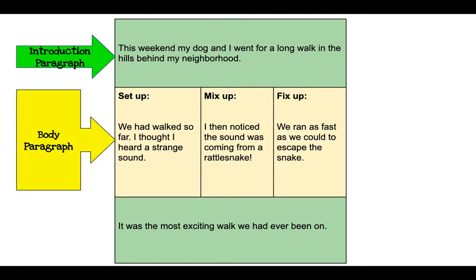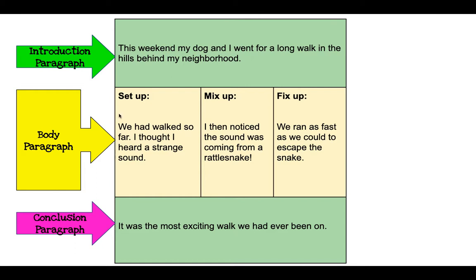In the introduction it says, 'This weekend my dog and I went for a long walk in the hills behind my neighborhood.' Here's the body paragraph: 'We had walked so far I thought I heard a strange sound. I then noticed the sound was coming from a rattlesnake. We ran as fast as we could to escape the snake.' And in the conclusion it says, 'It was the most exciting walk we had ever been on.' I told my friend this is pretty good — in the introduction you talked about your setting, it was last weekend in the hills, you introduced the characters, the dog and I, and you told us a little about the situation: they were going for a walk. Pretty good.